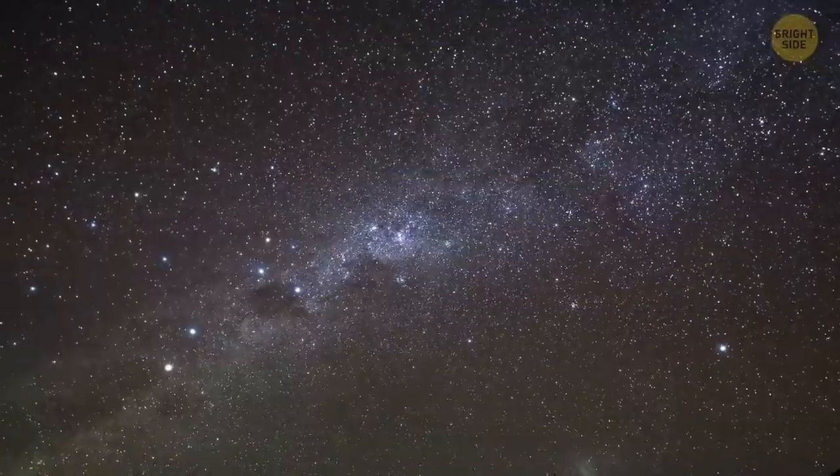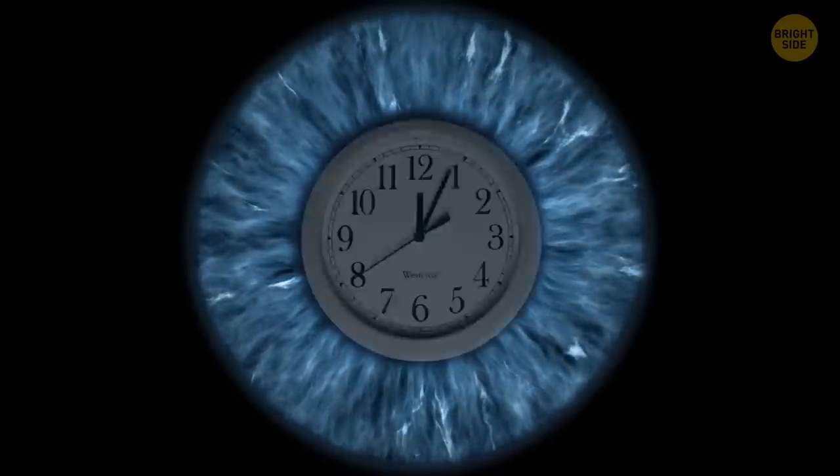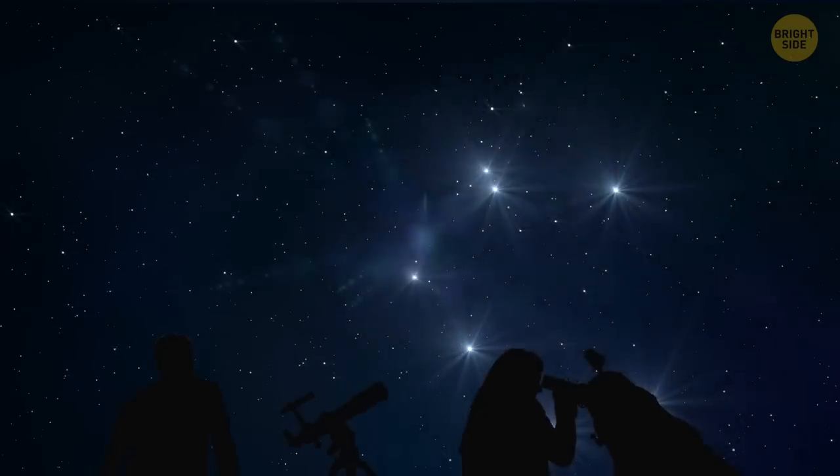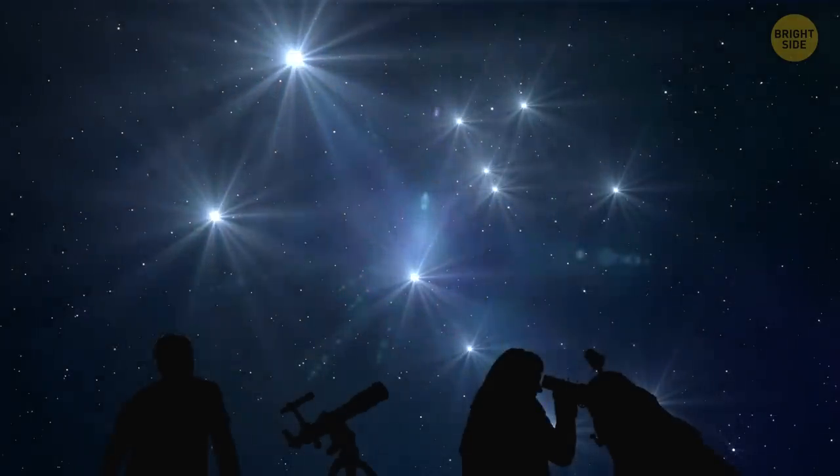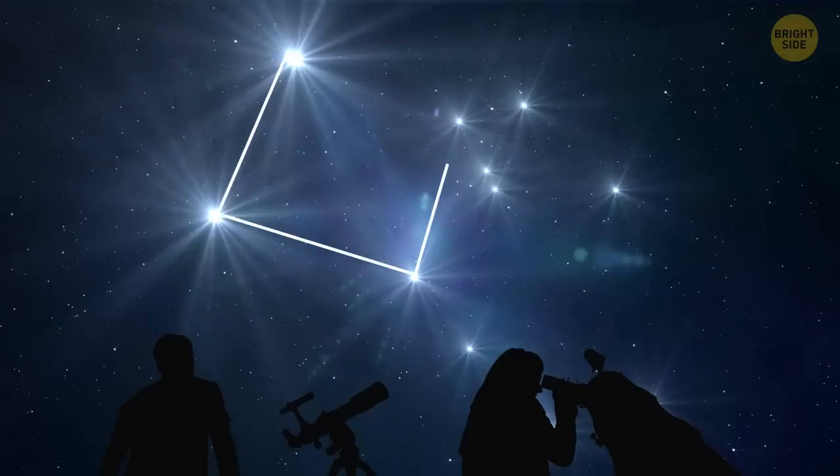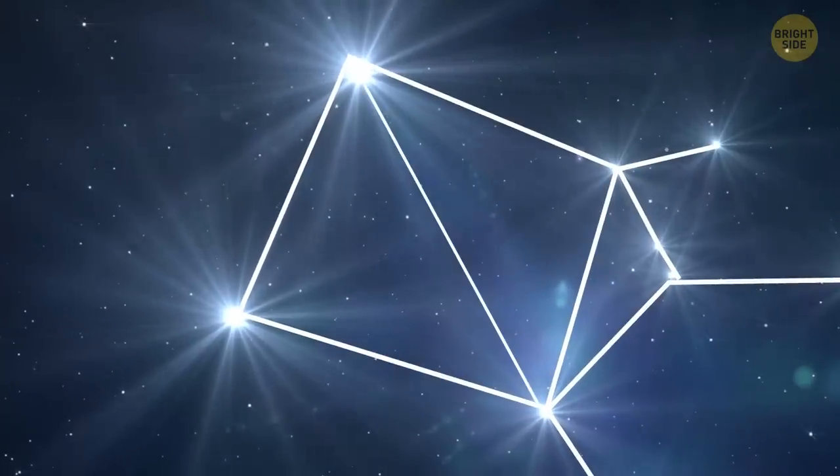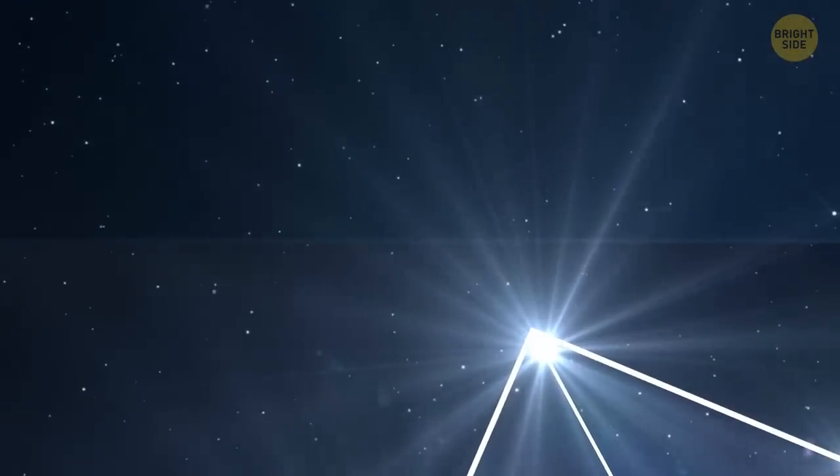To see the Andromeda galaxy, you must allow your eyes to become dark-adapted. This might take about 10 minutes while your pupils dilate to take in as much light as possible. M31 is best seen from late summer through winter, when the great square of Pegasus the Winged Horse is overhead. Draw a line across the great square diagonally upwards from the lower corner star, then go a little further beyond the square.